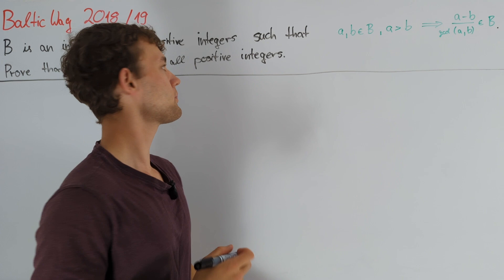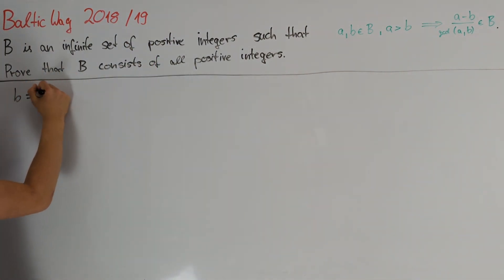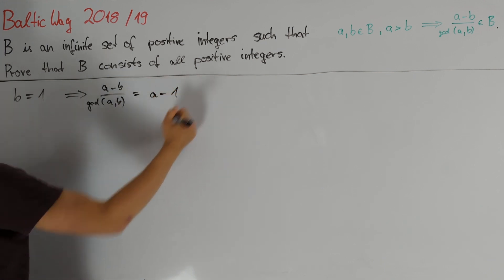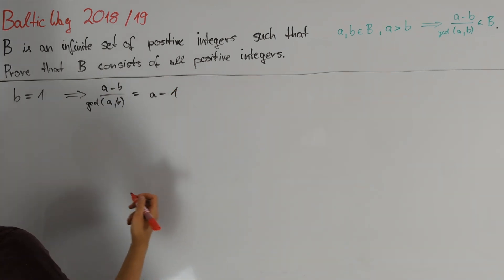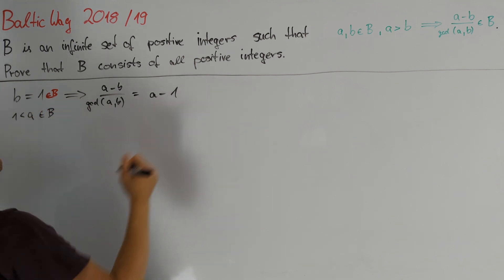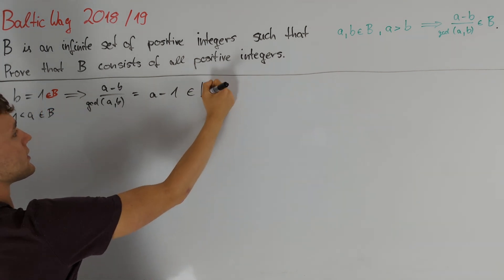To get a better understanding of this expression, a very natural first idea is to plug in the value b equals 1. Because we know that the greatest common divisor of any positive integer a with 1 is equal to 1, and therefore in this case we have that a minus b divided by gcd of a and b is equal to a minus 1 divided by 1. So, in conclusion, if we assume that b equals 1 is an element of capital B, then we get that for any a greater than 1 that is also in B, that a minus 1 must be contained in B as well.